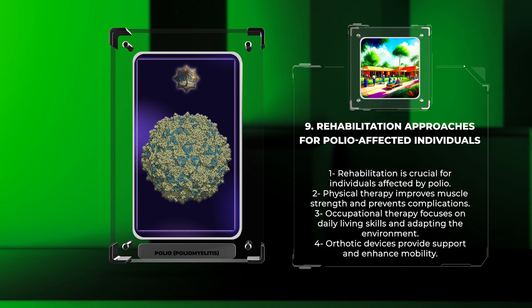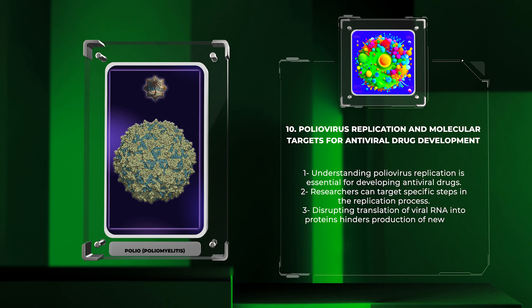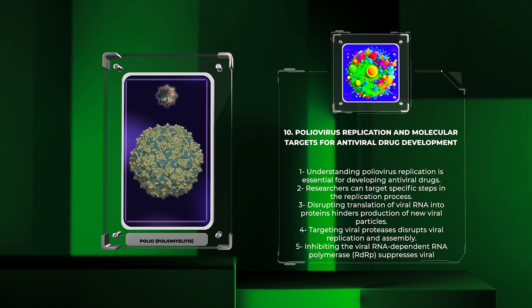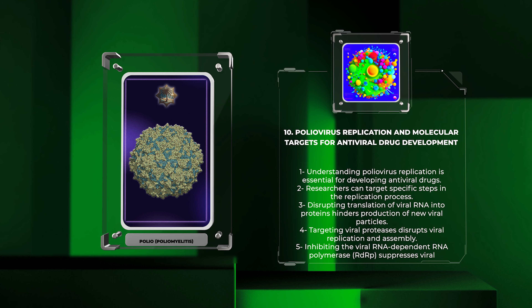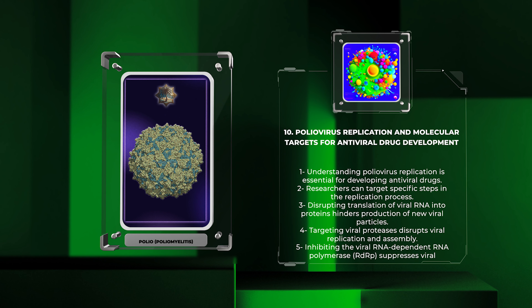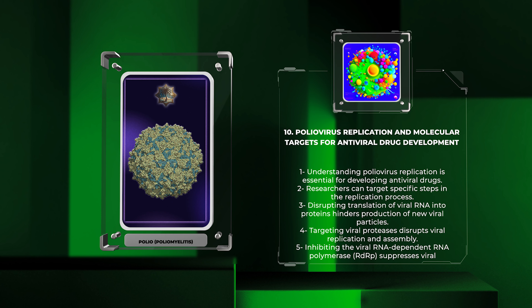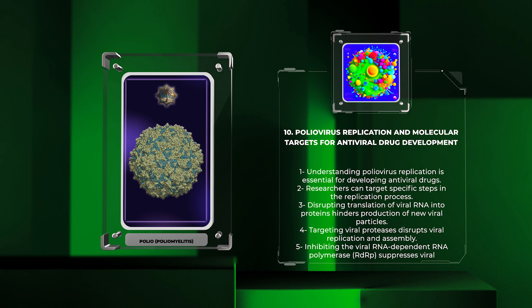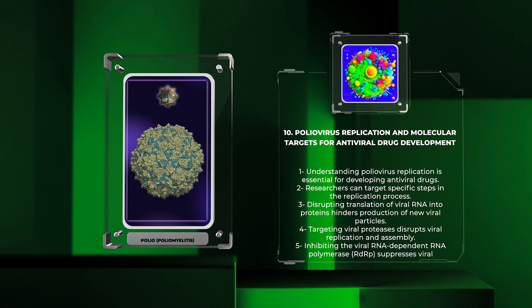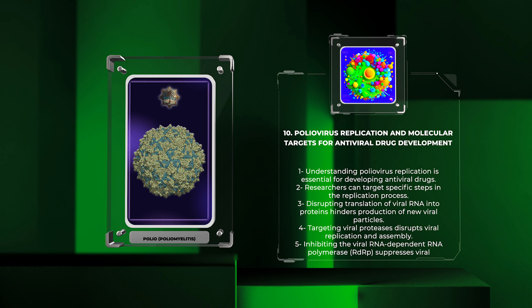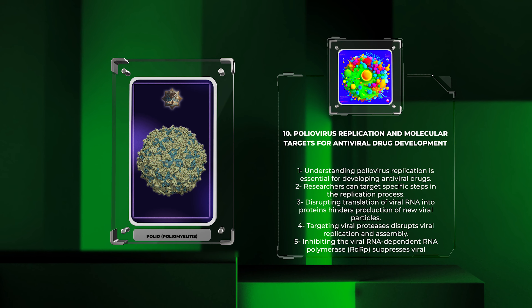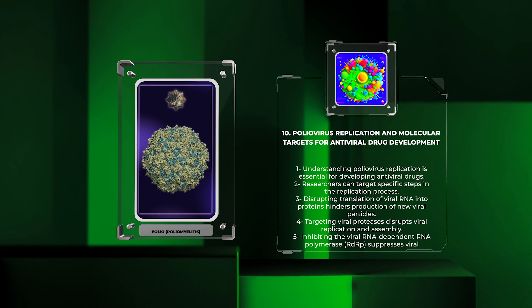We will now discuss poliovirus replication and targets for antiviral drug development. Understanding how poliovirus replicates is essential for developing effective antiviral drugs. One possible target is the translation of viral RNA into proteins; by disrupting this process, researchers can hinder the production of new viral particles. Viral proteases, crucial for protein processing and maturation, can also be targeted. Inhibiting the viral RNA-dependent RNA polymerase, RDRP, important for viral genome replication, also shows promise by suppressing viral replication and reducing viral load. Challenges such as drug resistance and off-target effects must be addressed, yet ongoing research offers hope for effective poliovirus treatments.